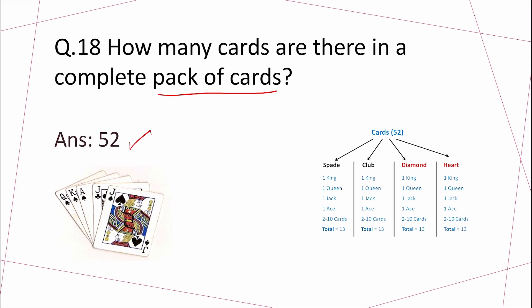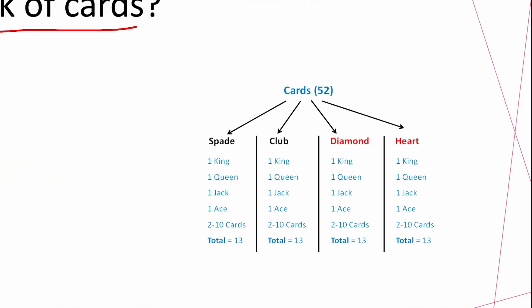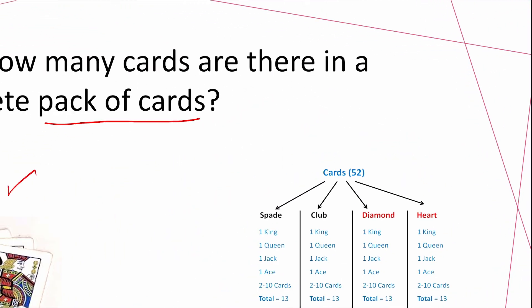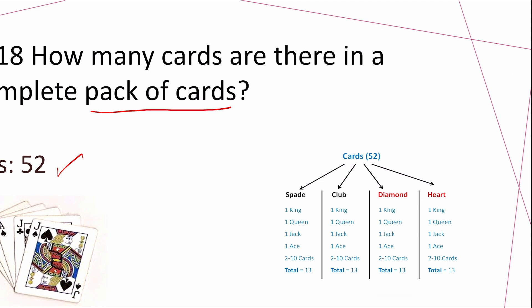Answer: 52. Out of 52 cards there are two types: black cards and red cards. In the black cards there are spades and clubs, both 13 in number. In the red cards there are diamonds and hearts, both 13 in number. Spades and clubs total 26, and diamonds and hearts total 26. 26 plus 26 equals 52.